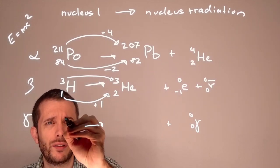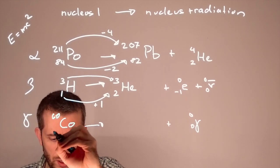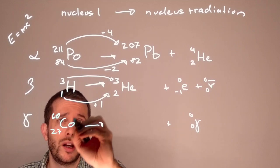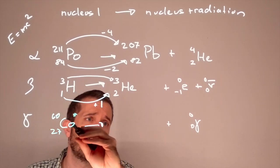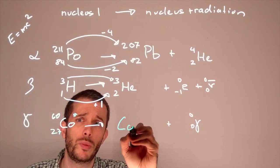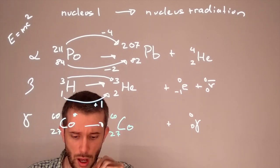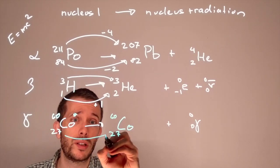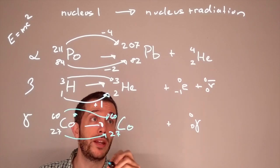So as an example, we have cobalt-60. Often we're going to mark an unstable nucleus with a little asterisk, because you're going to see nothing really happens. The cobalt-60 remains cobalt-60, just it is more stable. So the numbers here, if you go for gamma radiation, remain the same.